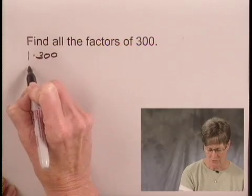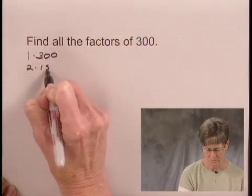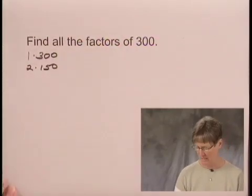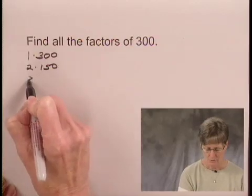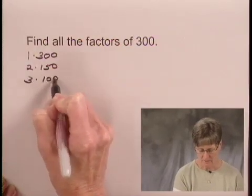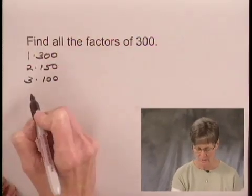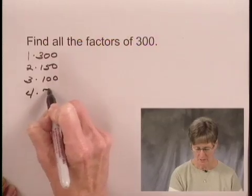We know that we can divide 2 into 300 so 2 times 150 is another factorization. 3 times 100 is another factorization of 300. We also have 4 times 75.